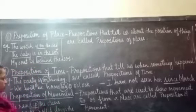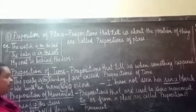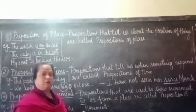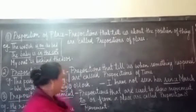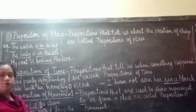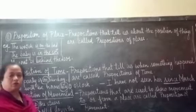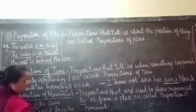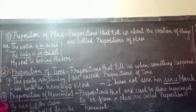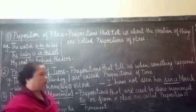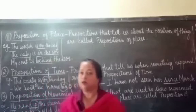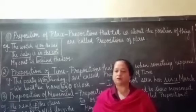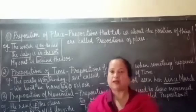Next: The rocks rolled down the hill. We are talking about the rocks — the verb is 'rolled' — and we are also talking about the hill. The rocks rolled down the hill, so 'down' is the preposition of movement. So children, we have understood three different kinds of prepositions: preposition of time, preposition of place, and preposition of movement.